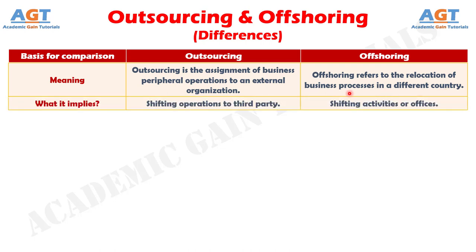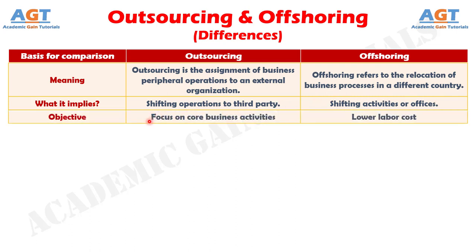Number 2: Outsourcing involves shifting business operations to external parties; conversely, offshoring involves shifting of activities and offices. Number 3: The objective of outsourcing business activities is to focus on the core activities of the company; on the other hand, offshoring is performed to minimize the cost.